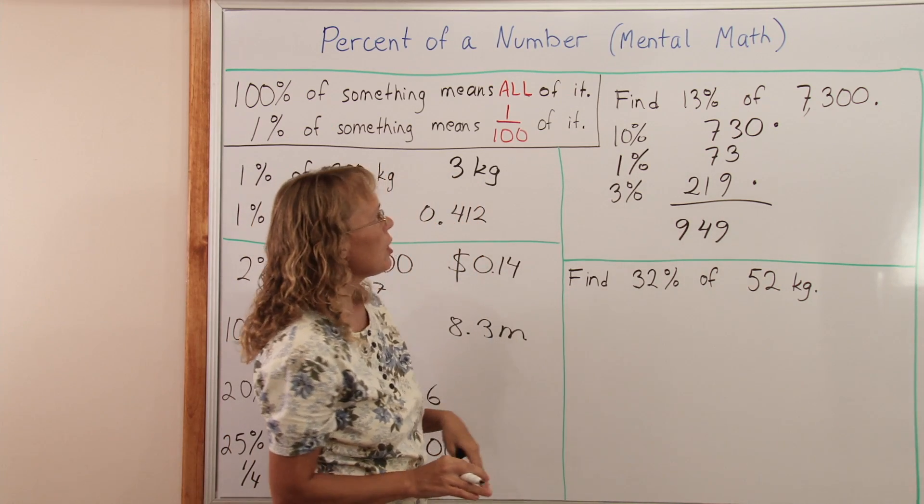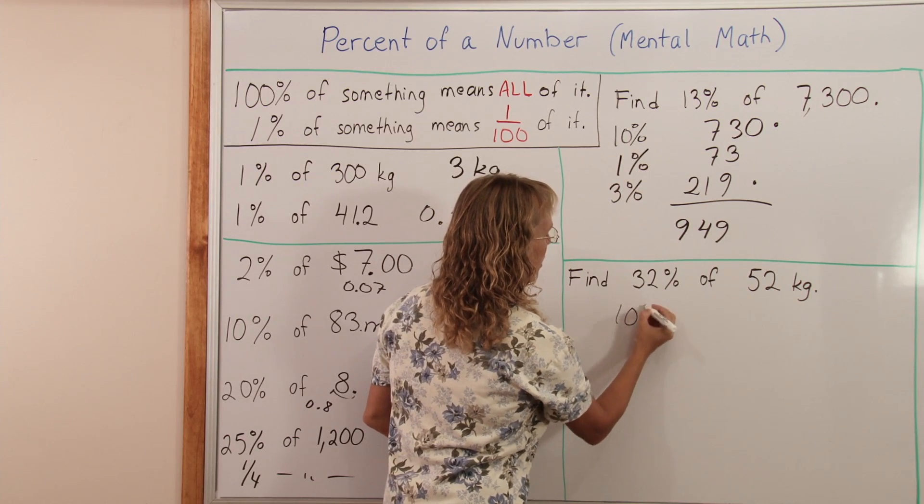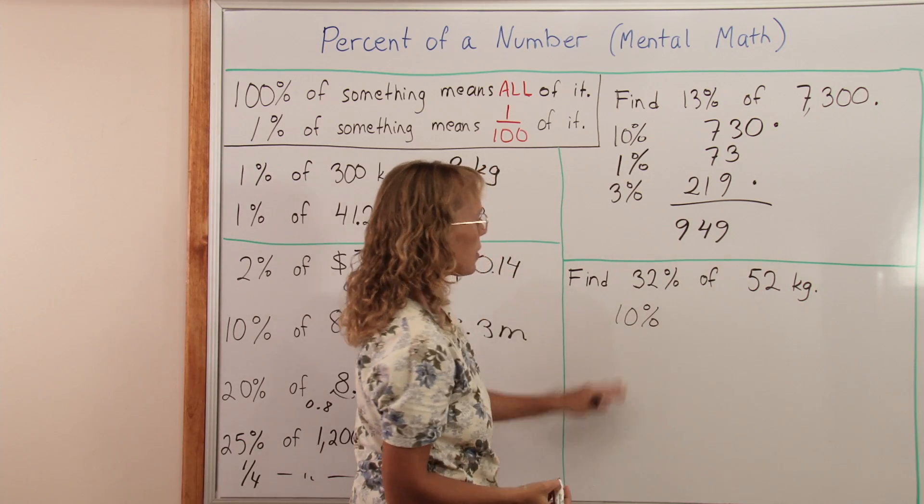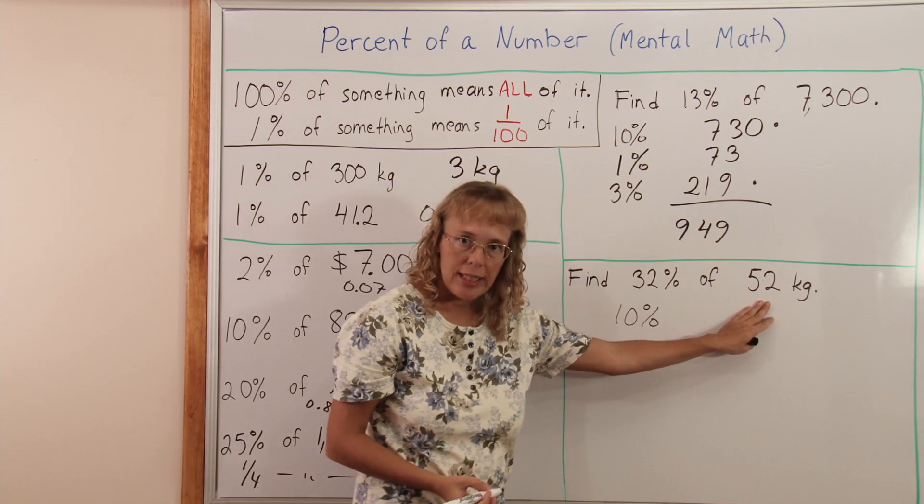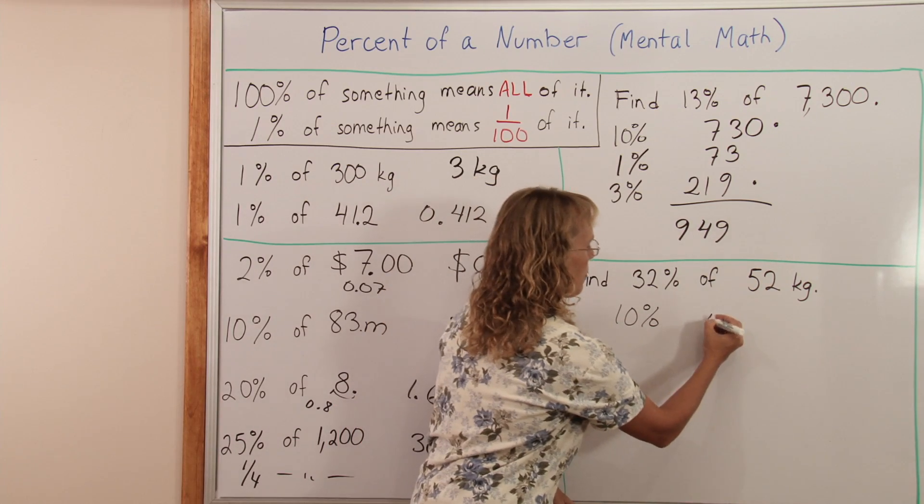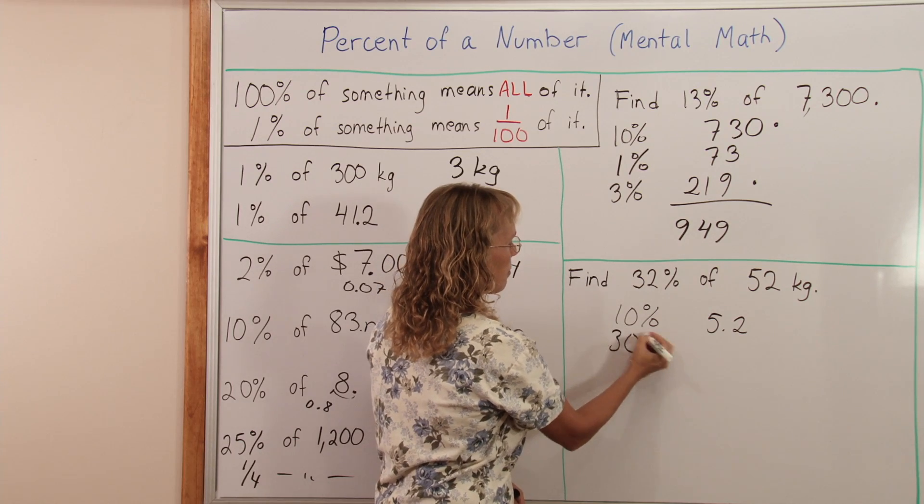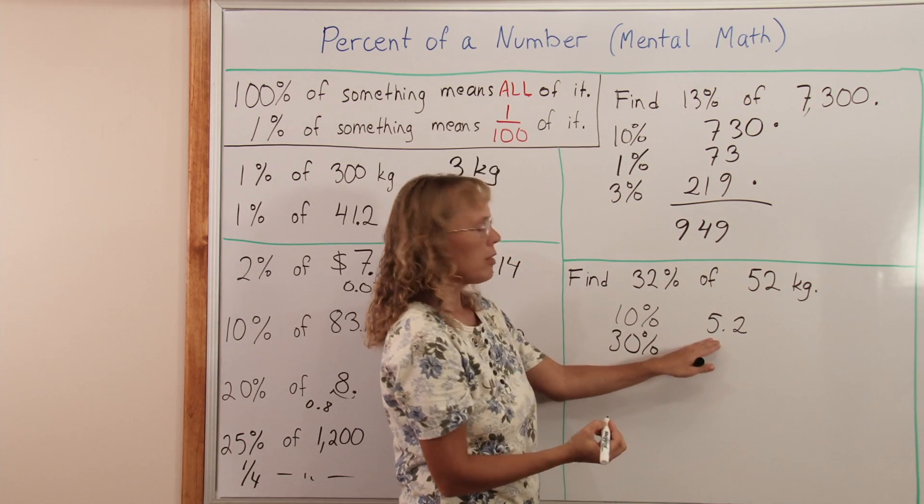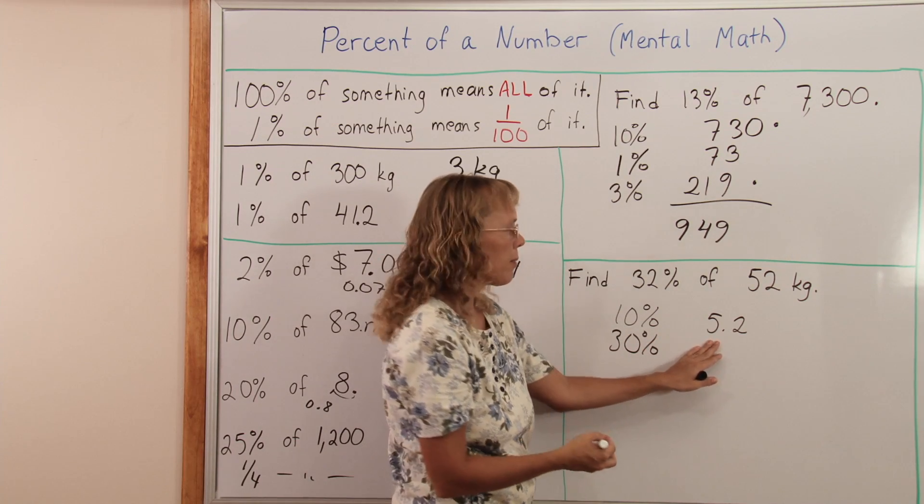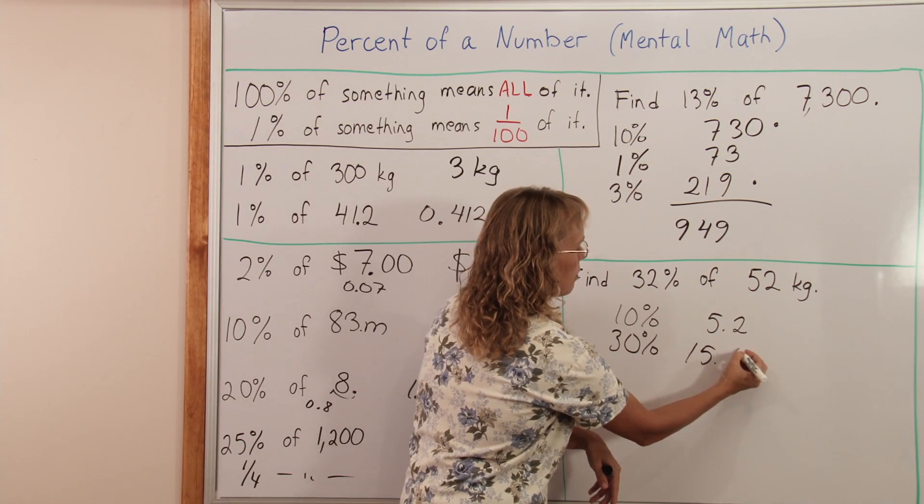Similarly here, find 32% of 52 kilograms. We'll start with 10% of it. Divide this number by 10. There's a decimal point here, move it here. 5.2 kilograms. And then 30% of it. We have to take this number times 3. 5 times 3 and then 0.2 times 3. Then 2%. We'll take 1% first.